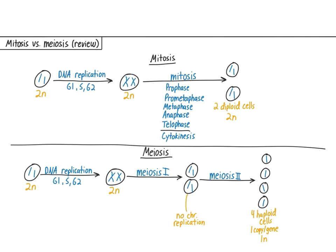Before we get to spermatogenesis, let's quickly review meiosis and mitosis. Recall that if we have a diploid cell, as it goes through G1, S, and G2, the chromosomes are replicated. When mitosis occurs, two diploid cells are produced, both with the same number of chromosomes as the parent cell.